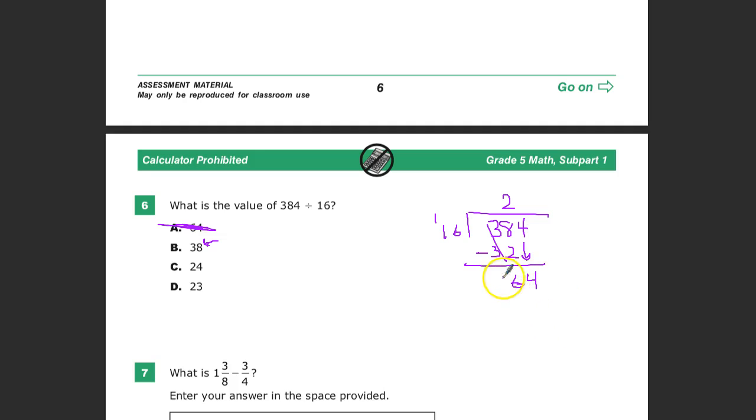And then there's nothing to bring down here, so this is the last step. Now I have to think, what do I multiply 6 by to get something that ends in 4? Well, 6 times 1 is 6. 6 times 2 is 12. 6 times 3 is 18. 6 times 4 is 24. Hey, that sounds pretty good. So 6 times 4.